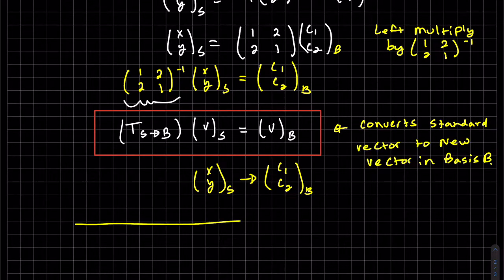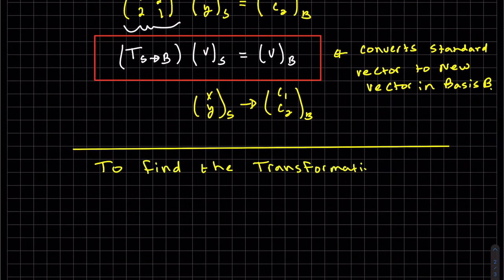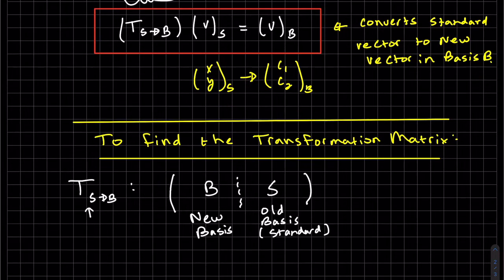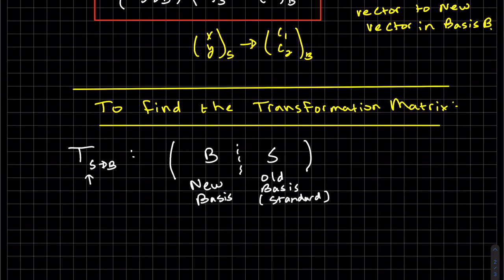So how do we find this transformation matrix? We found the inverse and we did it. So we found this was our old bases. It's going from, of course, this was our standard bases. We're converting from standard bases to our new bases.